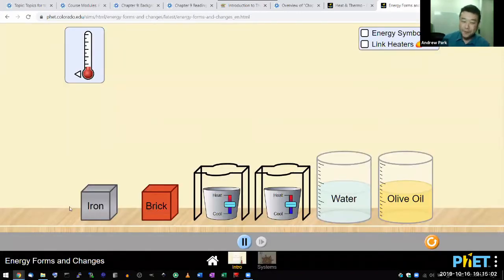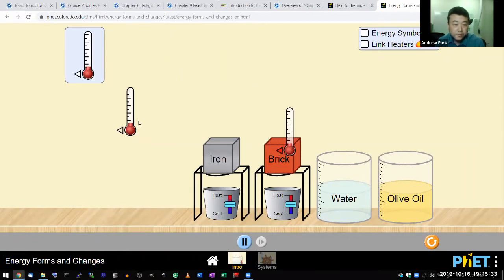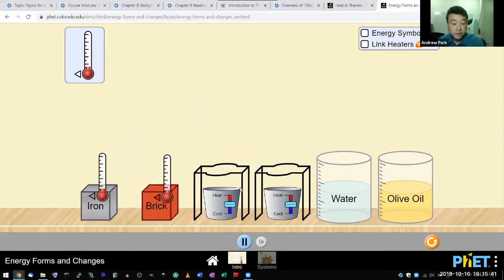Let me start out with the intro. I can use this to talk about temperature. We can put an iron and brick block here. What I can do to illustrate is what happens to these two blocks as we heat them. I have some control here. I can link heaters to make sure I apply the same amount of heat.